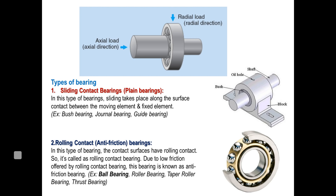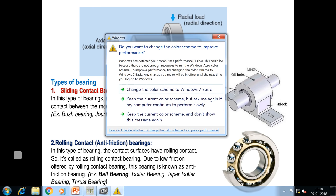The two basic categories of bearing are: one is sliding contact, and another is rolling contact. Based on the friction nature, we have this classification. In sliding contact, the friction nature is sliding. As you can see in the diagram, the bearing consists of a bush and an oil hole, through which we pour a liquid film that provides bearing action. Sliding friction is comparatively more than rolling action, hence these are also called frictional bearings or plain bearings.